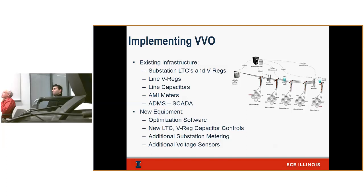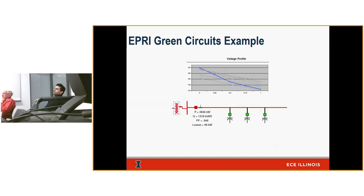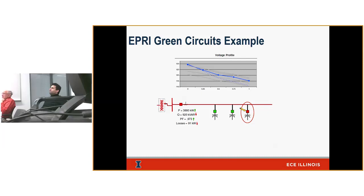Let's look at an actual circuit with actual data. Here's a circuit with an LTC — a load tap changer — and three capacitor banks along the feeder. The measurements before doing anything to the capacitors or voltage regulator are listed: P is real power in KW, Q is the VAR component, power factor in real time, and calculated losses. The voltage optimization algorithm typically tries to use cap banks first to flatten the voltage profile. The losses here are calculated based on a real-time load flow.